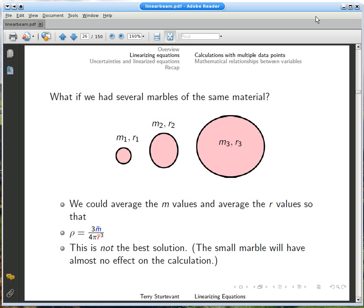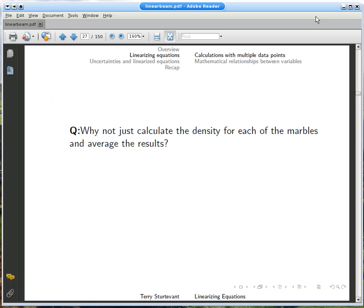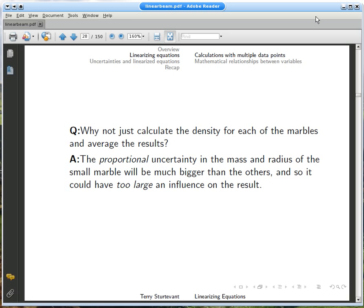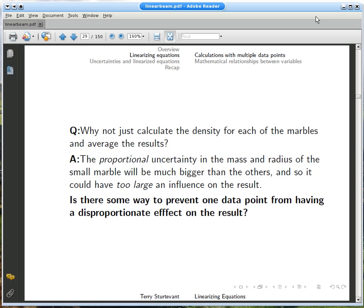But this would make the big marble dominate the result. What about if we calculated the density for each and averaged them? That would make the small marble dominate the result. Can we do better?